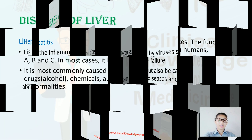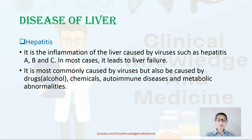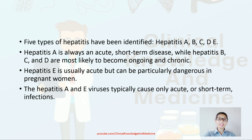Hepatitis is a disease of the liver — it is the inflammation of the liver caused by a virus, which can further lead to liver failure. It is most commonly caused by virus but can also be caused by drugs, chemicals, autoimmune disease, and metabolic abnormalities. There are five types: A, B, C, D, and E. Hepatitis A is always an acute short-term disease, while B, C, and D are most likely to become chronic. Hepatitis E is usually acute but can be particularly dangerous in pregnant women.